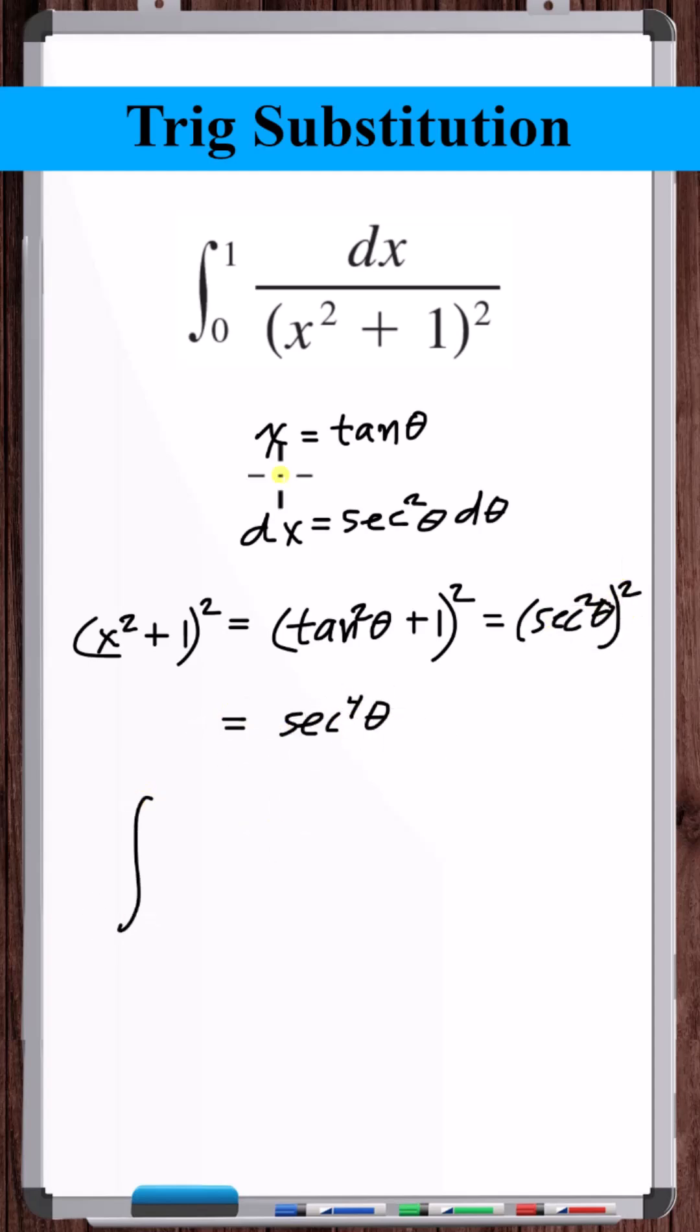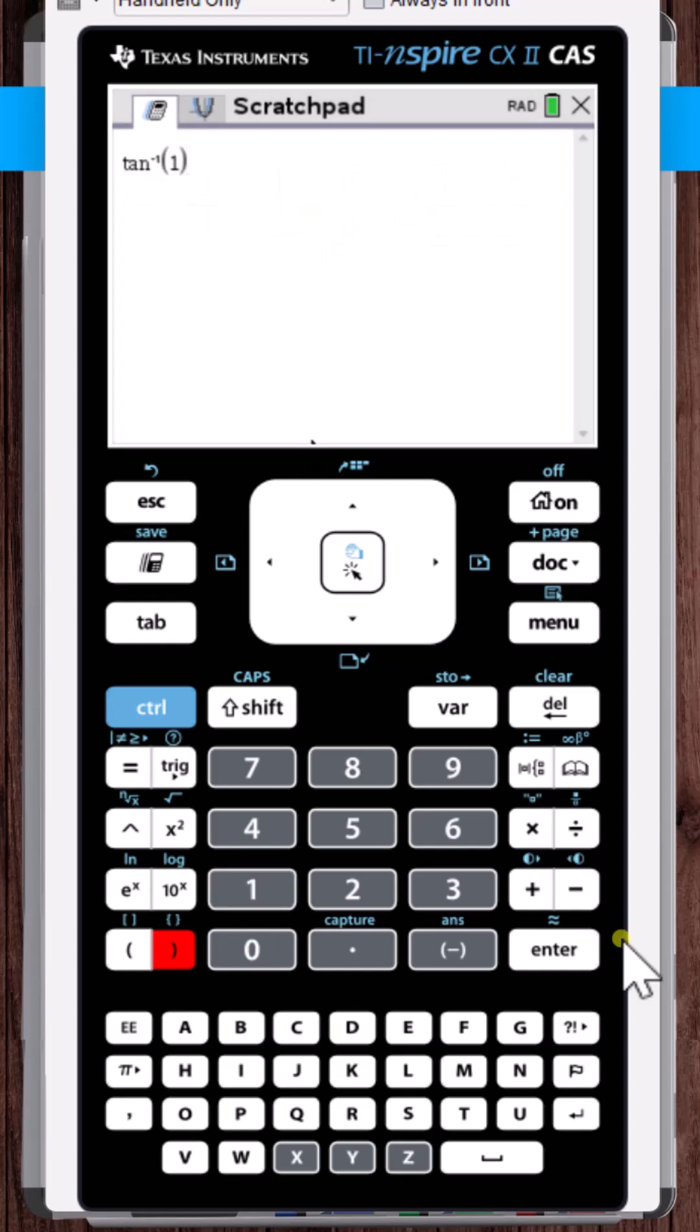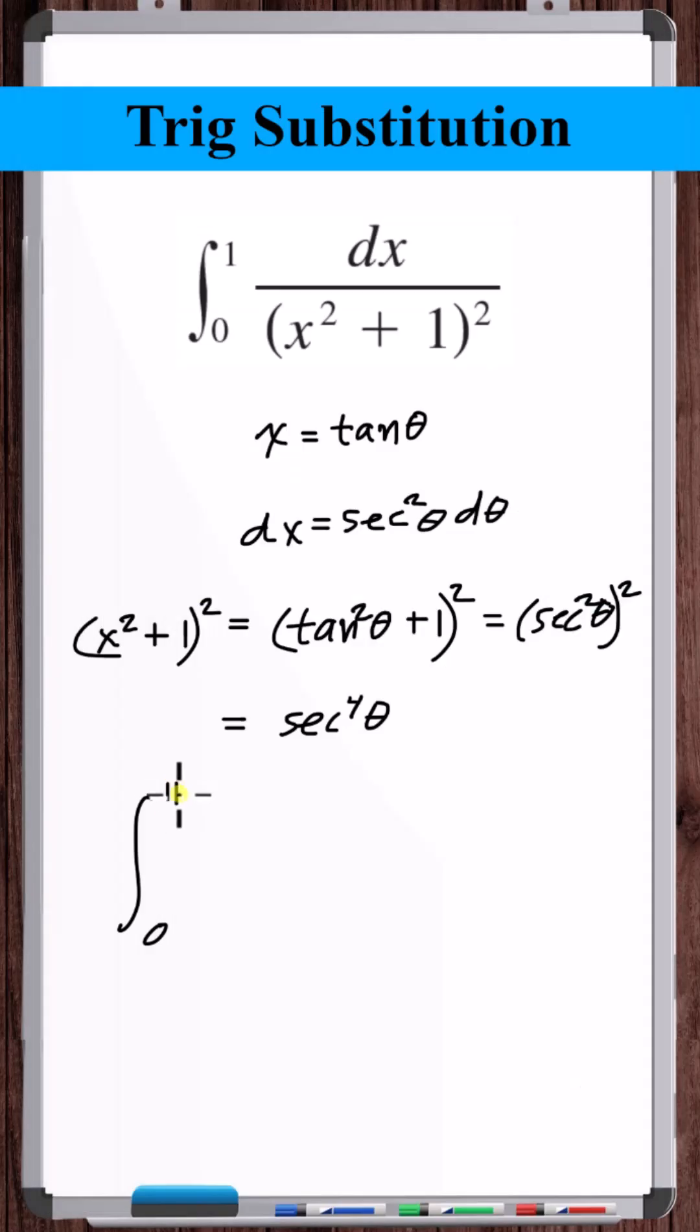When x is equal to zero, arctangent of zero is zero, so theta is zero. When x is equal to one, arctangent of one is pi over four, so theta is pi over four.